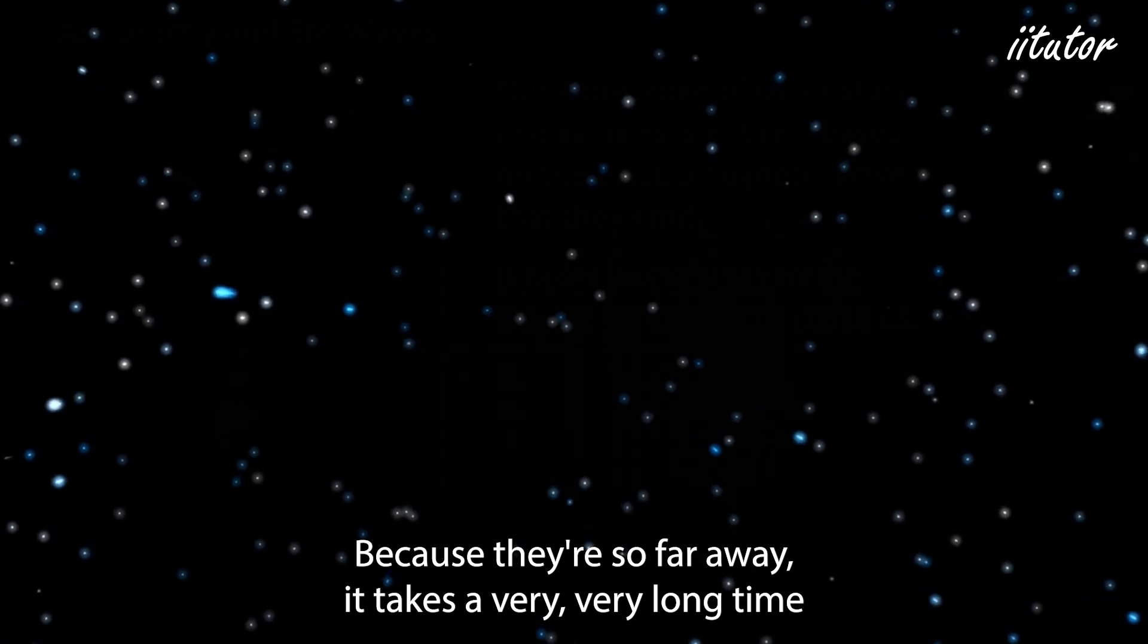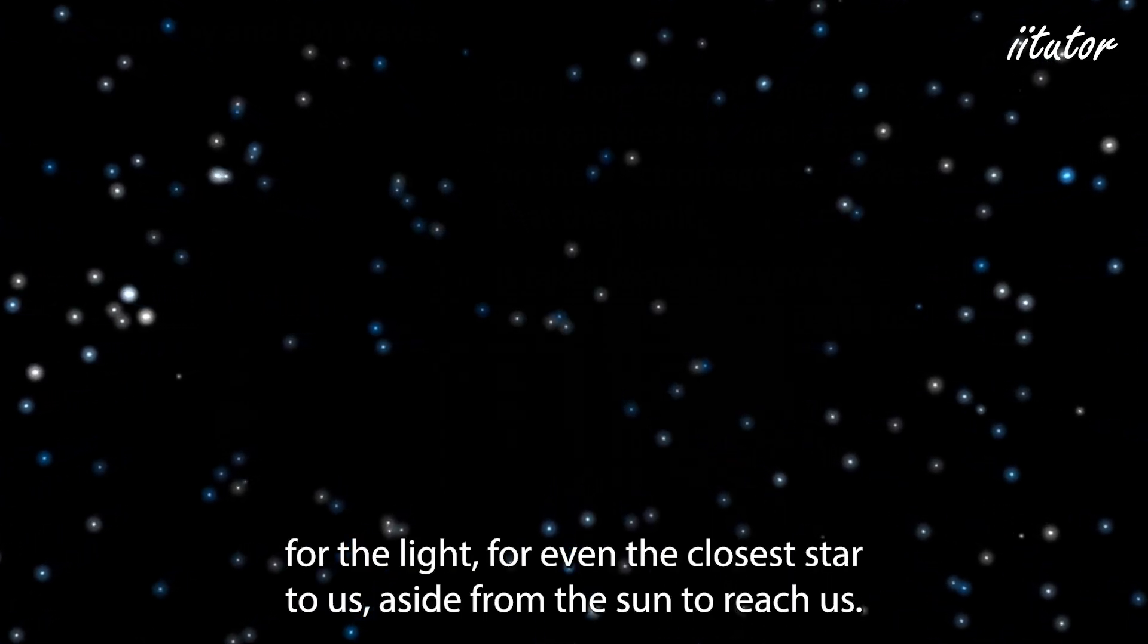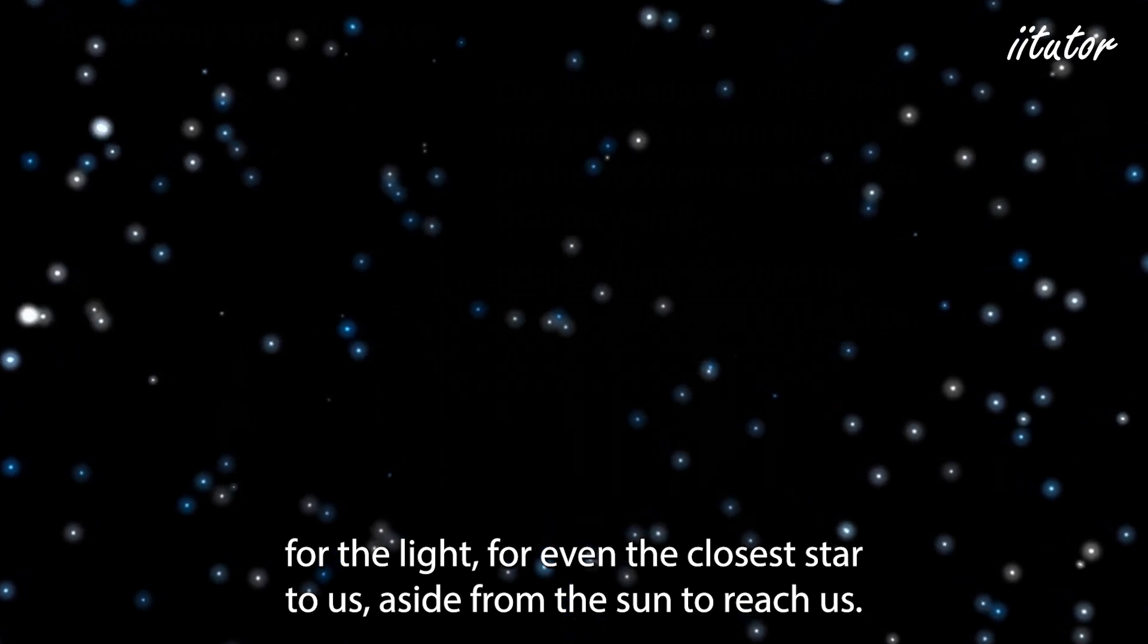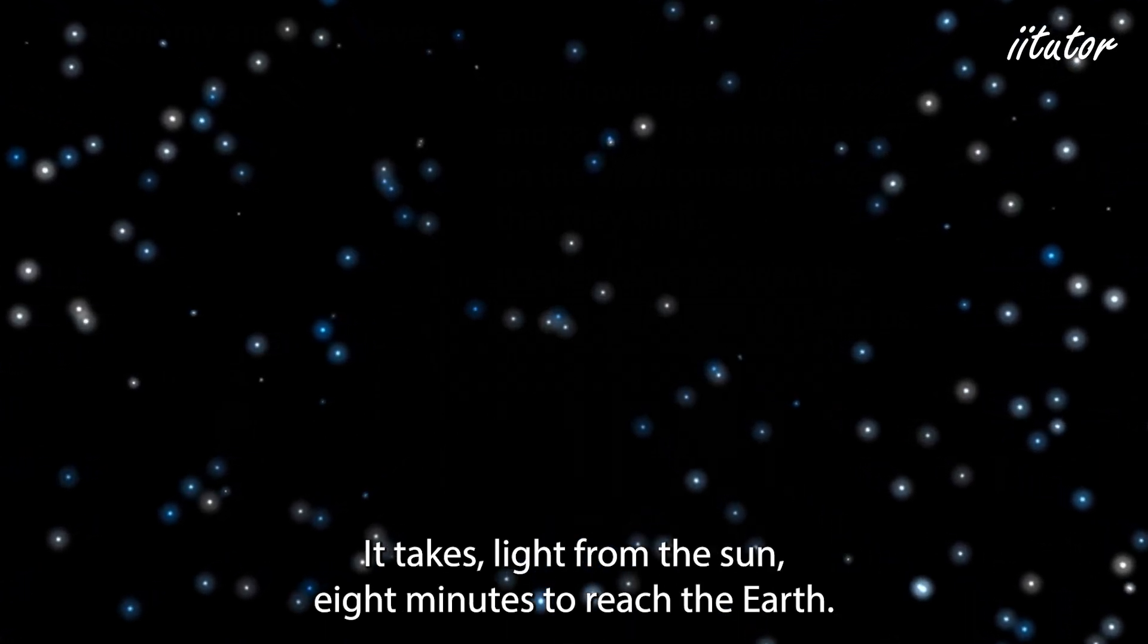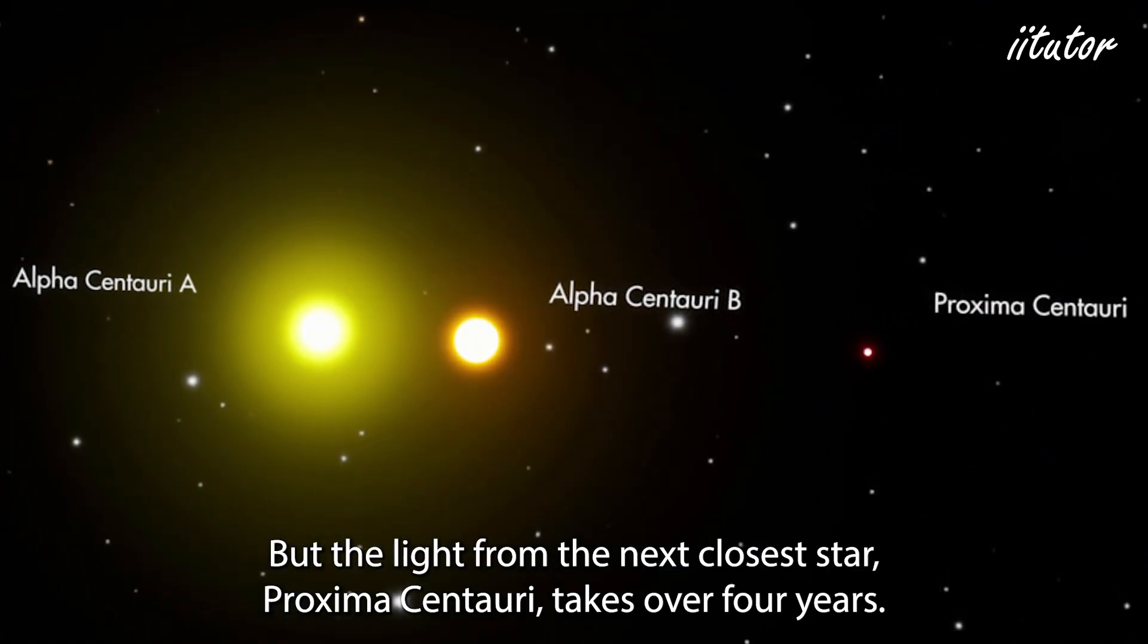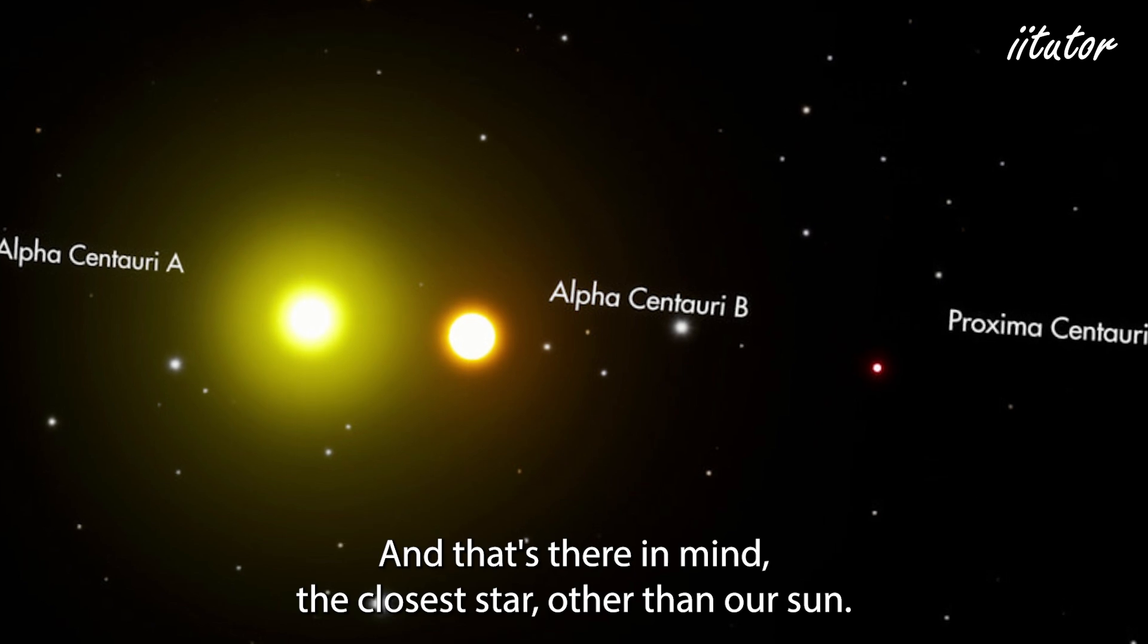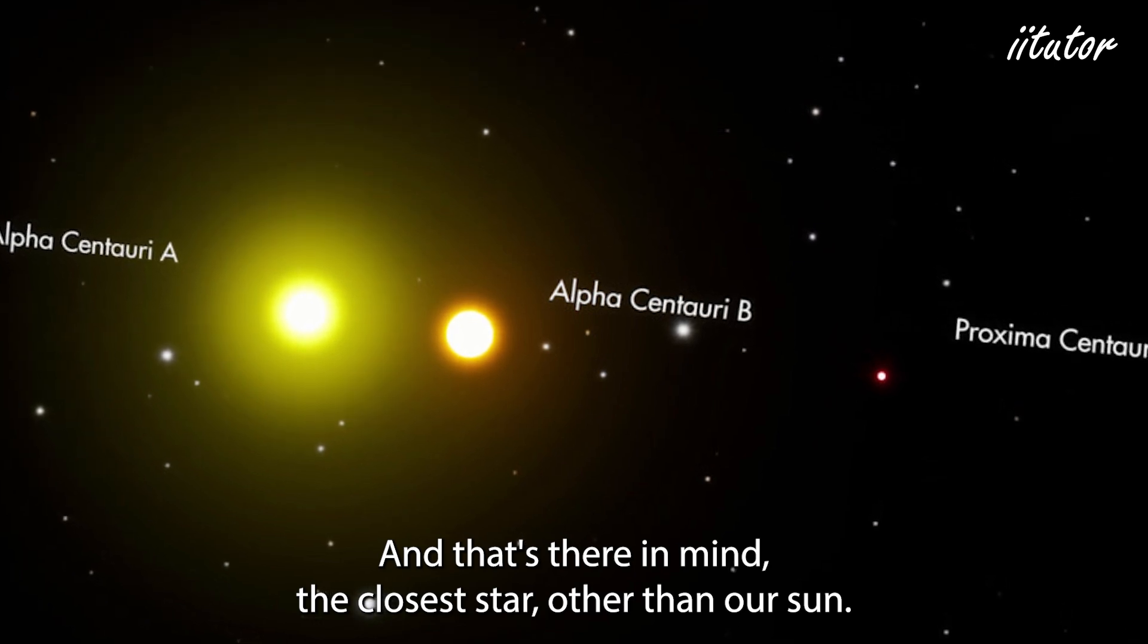Because they're so far away it takes a very long time for the light from even the closest star to us aside from the Sun to reach us. It takes light from the Sun eight minutes to reach the Earth but the light from the next closest star Proxima Centauri takes over four years and that's the closest star other than our Sun.